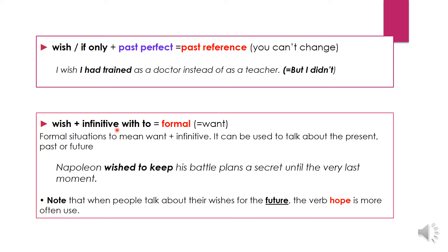After wish, we can also use the to-infinitive. But remember, this is quite formal — it would be an equivalent of 'want', used in formal situations. It can be used to talk about the present, past, or future. For example, 'Napoleon wished to keep his battle plans a secret until the very last moment.' So here it's an equivalent of 'want' and it's a formal register.